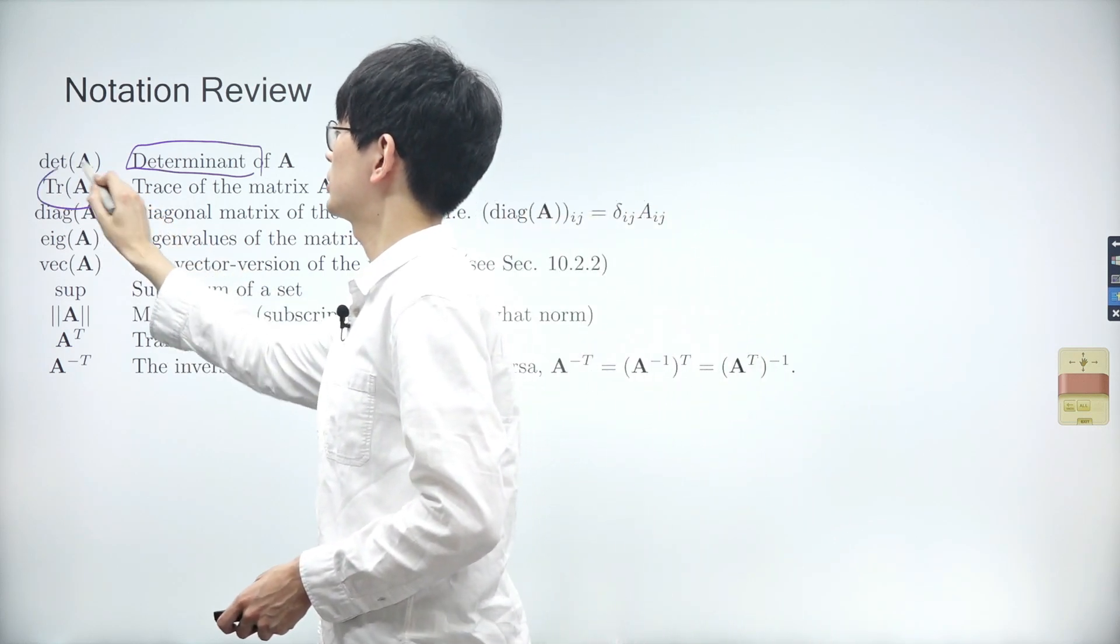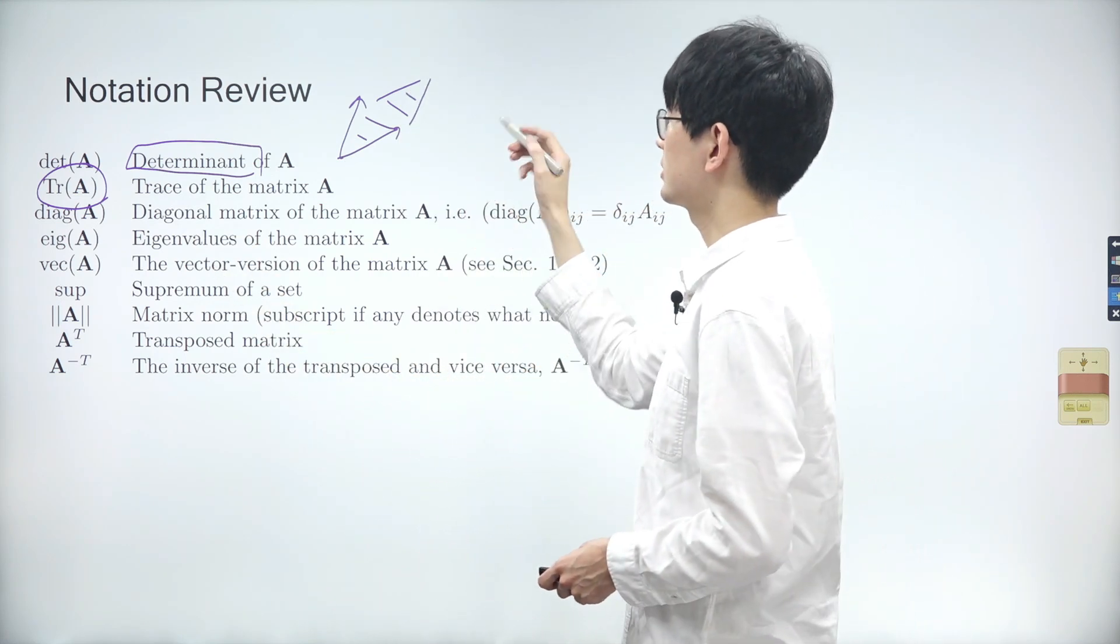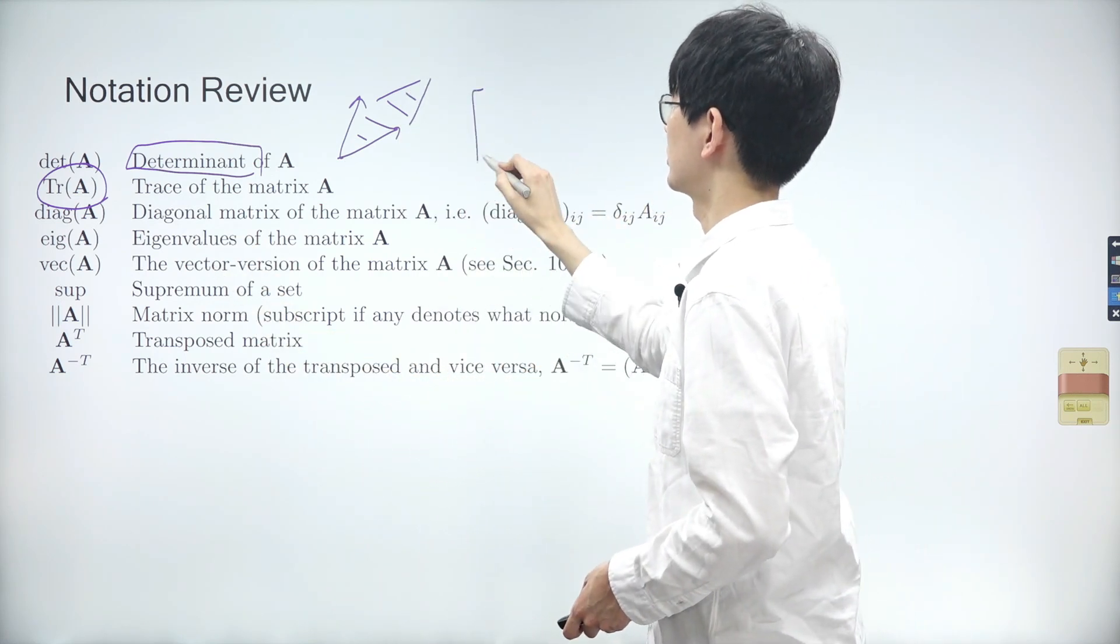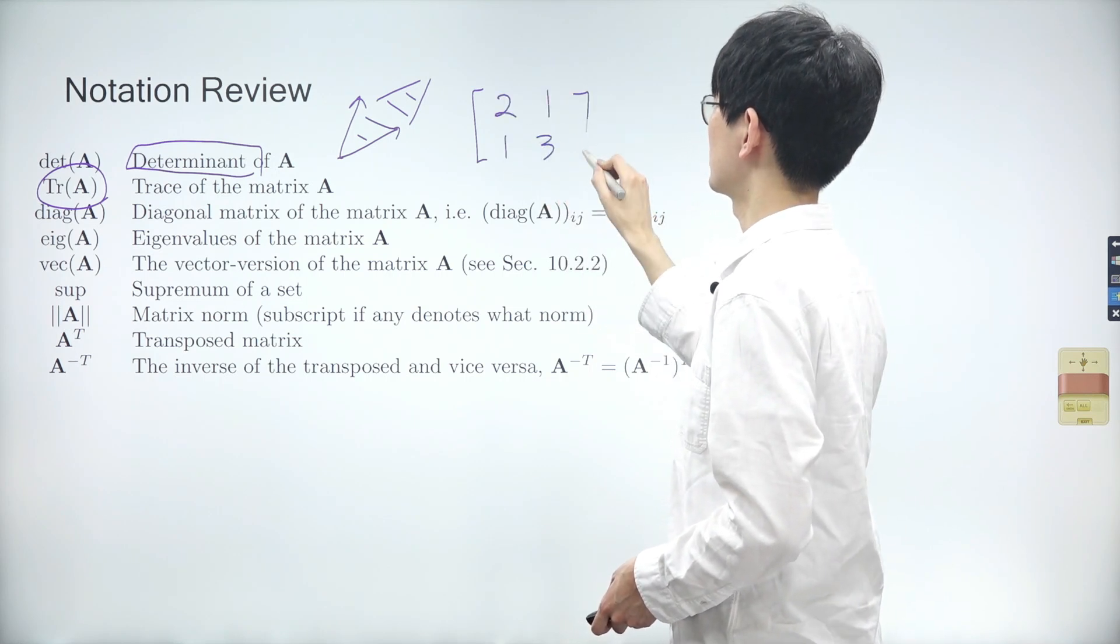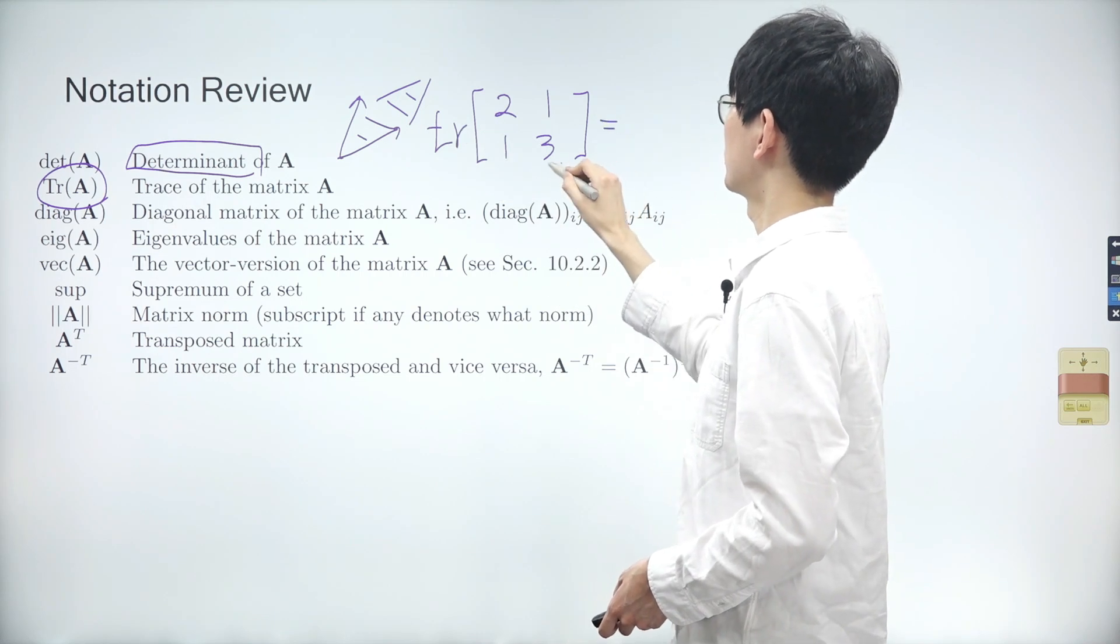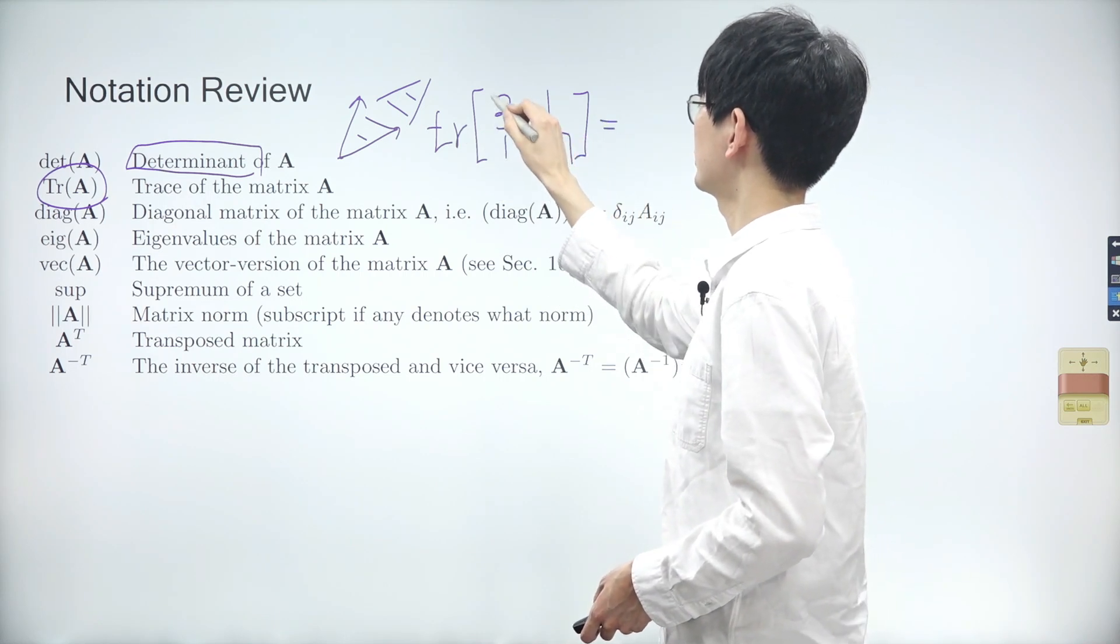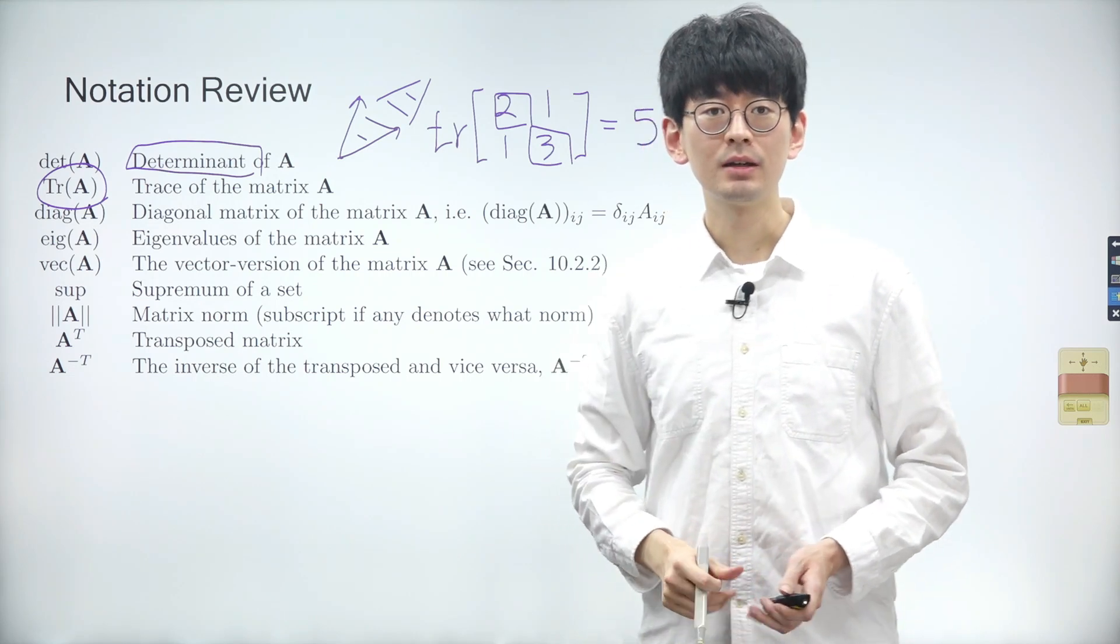Although we did not discuss the trace of a matrix in the previous lecture, it's important to address it now since it's crucial in linear algebra. For example, consider a matrix A with values 2, 1, 1, and 3. The trace of matrix A is the sum of its diagonal elements and it equals 5.